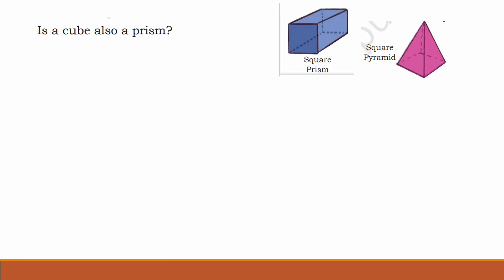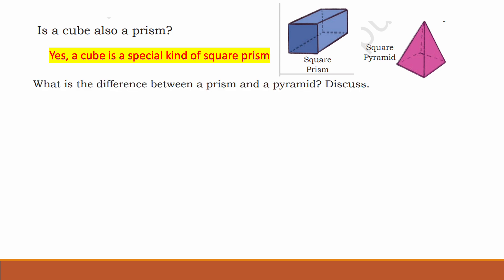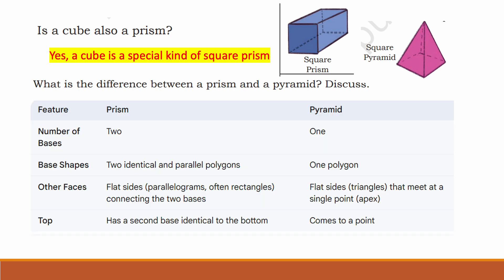Is a cube also a prism? Yes. A cube is a special kind of square prism. What is the difference between a prism and a pyramid? Let's see this table. Features: number of bases — for a prism, there are two identical parallel bases; for a pyramid, there is only one base.